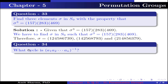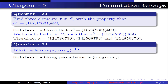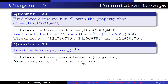Question number 34: What cycle is the permutation (A1, A2, ..., An) inverse? Given the permutation (A1, A2, ..., An), to find its inverse, write the permutation in reverse order: (An, An-1, ..., A1).